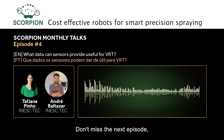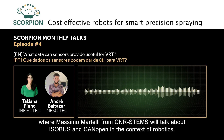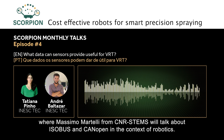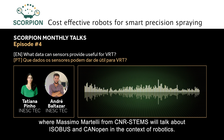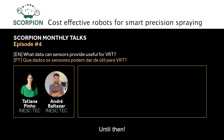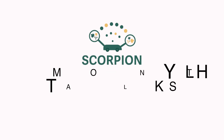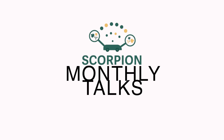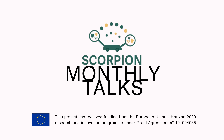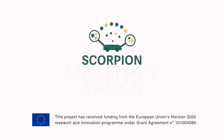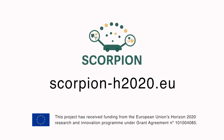That's all for today. Don't miss the next episode, in which Máximo Martelli from CNR Stems will talk about ISObus and CANopen in the context of robotics. The SCORPION project is funded under the H2020 programme of the European Commission, with a budget of more than 2 million euros, bringing together 10 partners from 4 countries. More information about the project can be found at scorpion-h2020.edu.